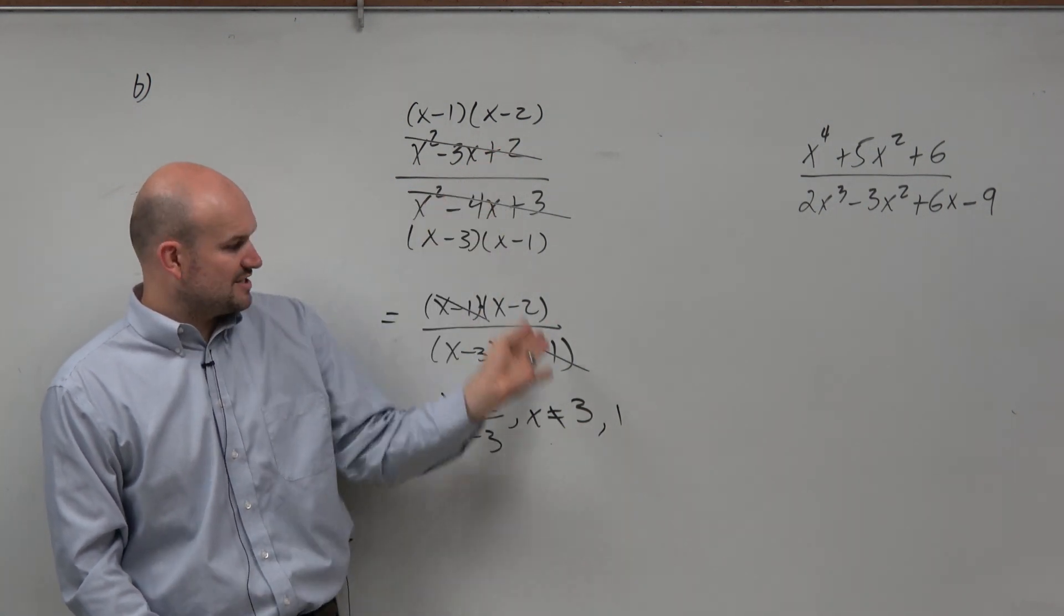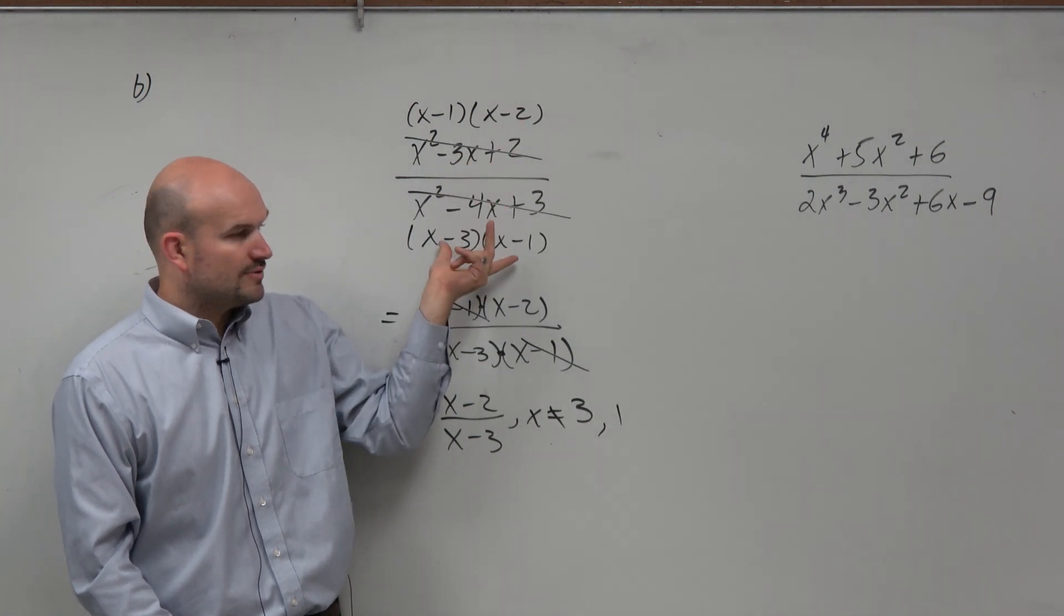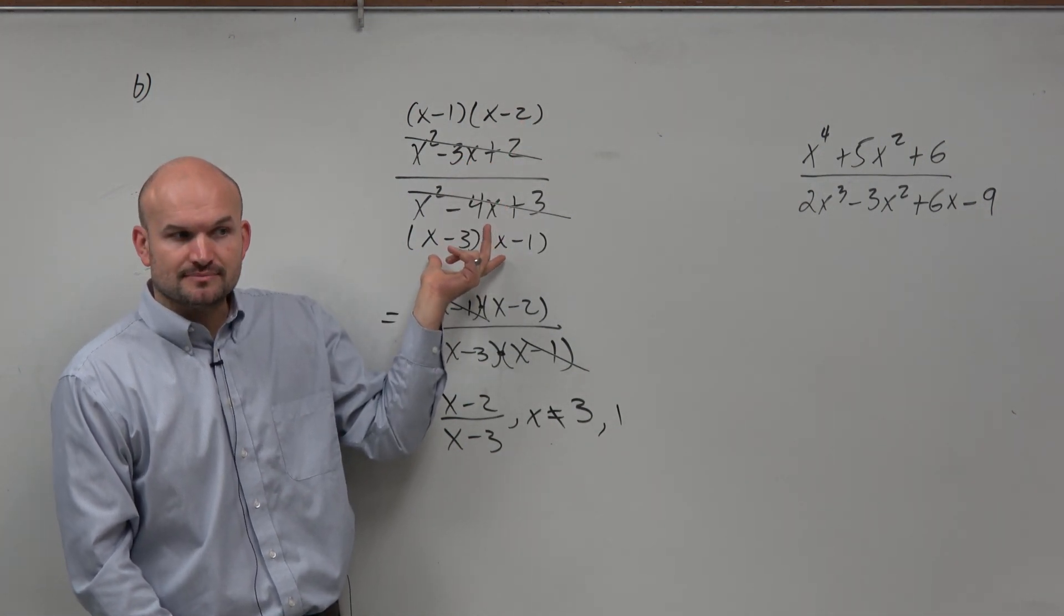And what you're looking for is not just the simplified answer, but the original problem. So you can see that 3 and 1 would both make the denominator 0.